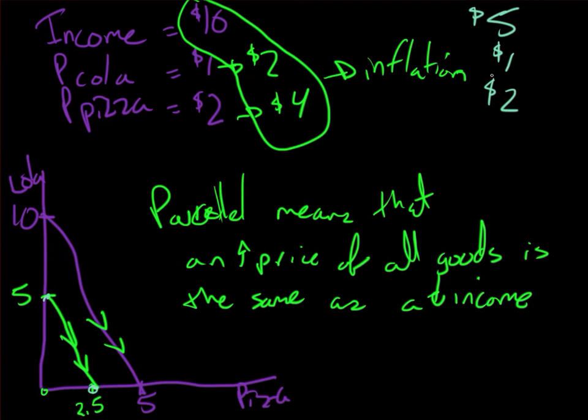So those were the main three changes in the budget constraint. A change in price of both goods can be seen as the same as a change in income — in this case a reduction. Keep that in mind and try to think about different scenarios in life and how the budget constraint would change.